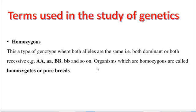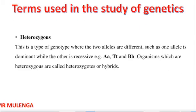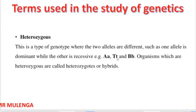Hetero means different. Heterozygous refers to the type of genotype where the two alleles are different, such as one allele being dominant while the other is recessive. For example, capital A with small a, capital T with small t, or capital B with small b — these are called heterozygous because they have two different alleles.